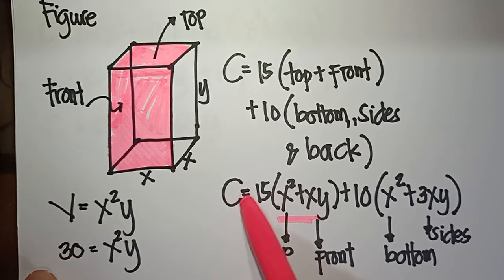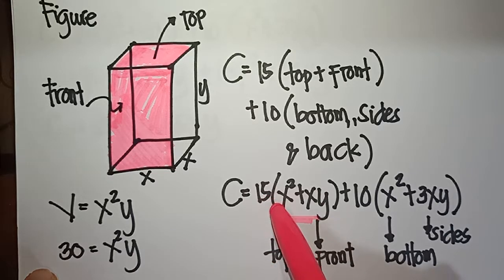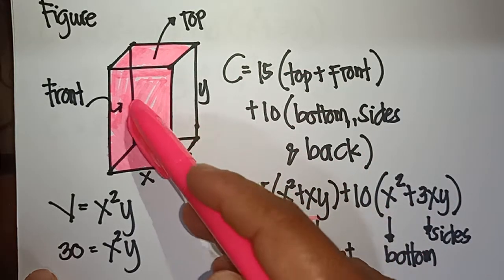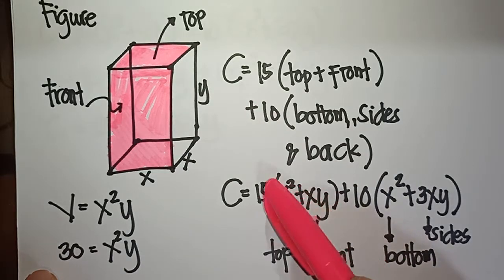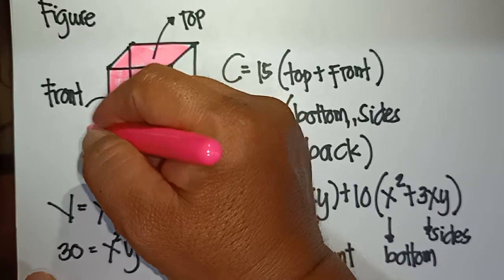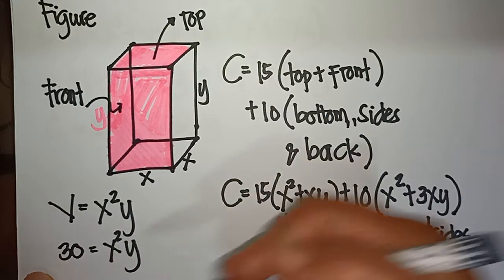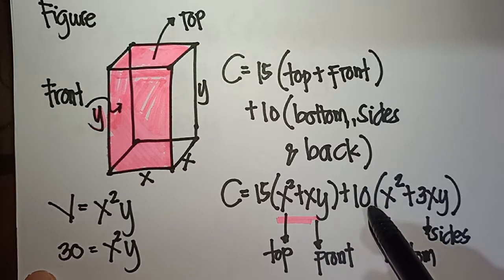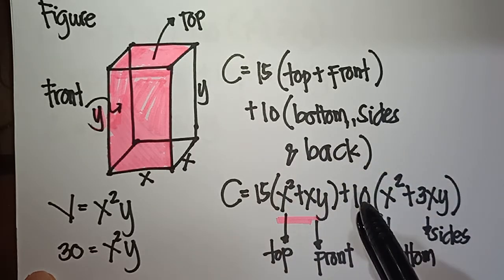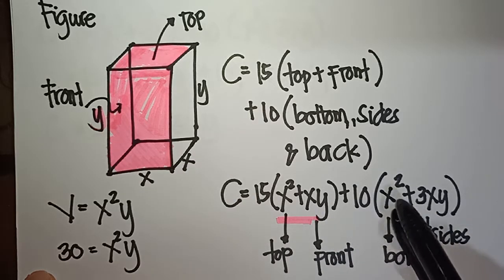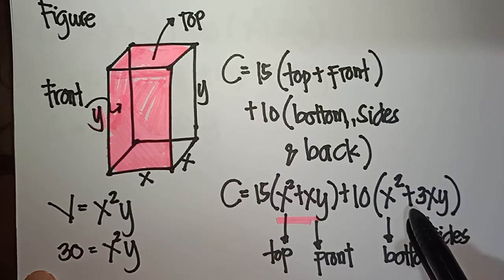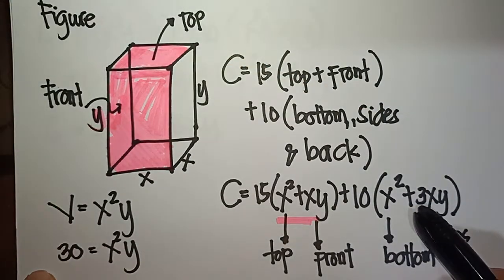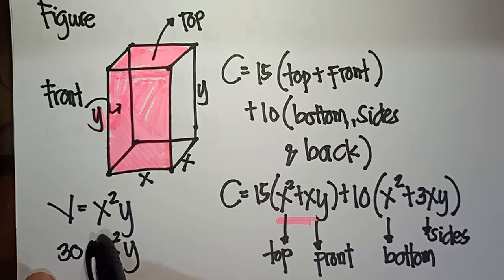Total cost equals 15 times the area of the top portion, which is x squared (since it's a square), plus the area of the front, which is x times y, where y is the height. Then for the bottom and three remaining sides, that is 10 times x squared, plus 3xy.